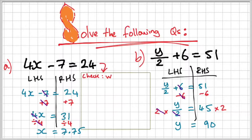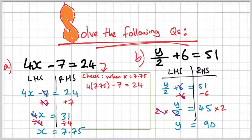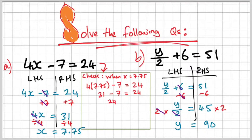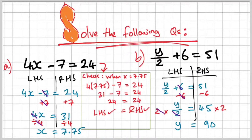We're not finished yet because we need to check if these values are true. We're going to substitute x equals 7.75 into 4x minus 7 equals 24. So 4 times 7.75 minus 7 equals 24 — that's 31 minus 7 equals 24. Since 31 minus 7 is 24 and that equals 24, the left-hand side and the right-hand side are balanced. That checks out well.